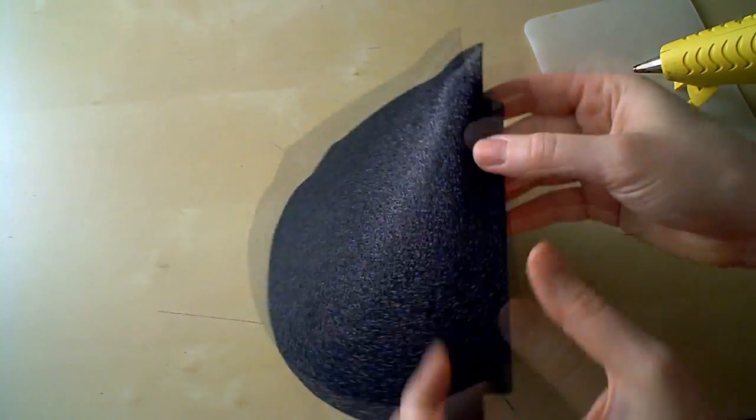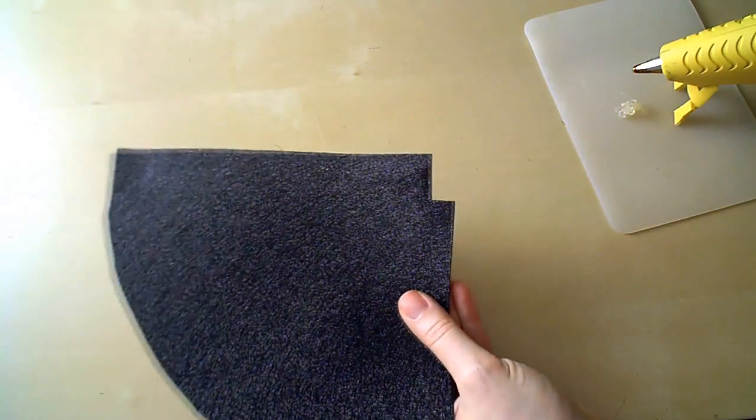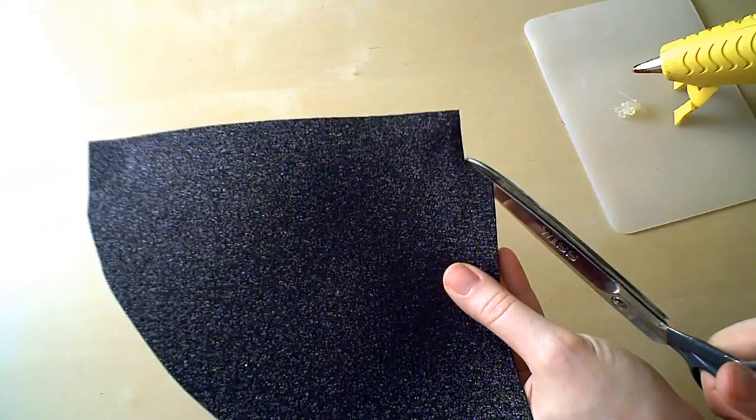It's hot glue time, so start heating up your glue gun. I found that if I trim this edge off at an angle, it made things easier. So go ahead and give it a little trim.